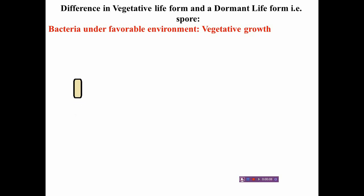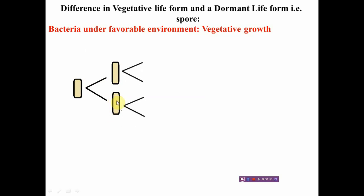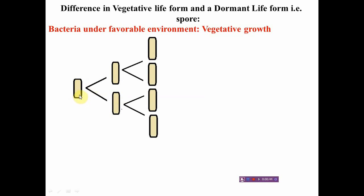What is the difference between a vegetative life form and a dormant life form? The vegetative growth of bacteria occurs when bacterial cells are present in a favorable environment with adequate nourishment and moisture. The cells perform active splitting — binary fission — and after each generation time the cell divides into two daughter cells. This life form that constantly grows and multiplies is called the vegetative life form.